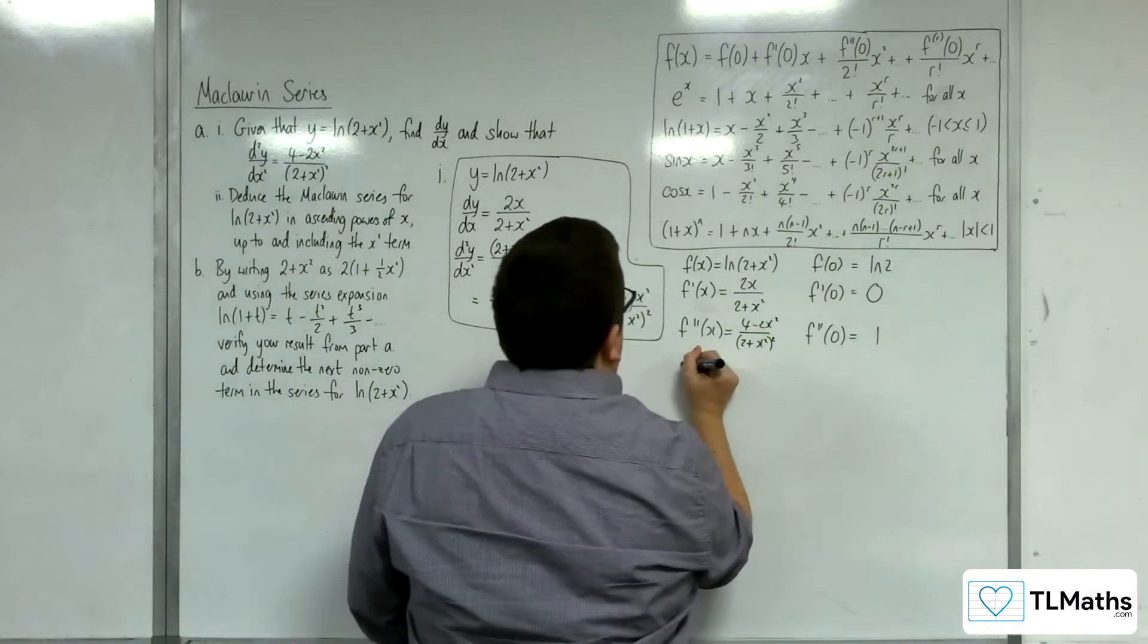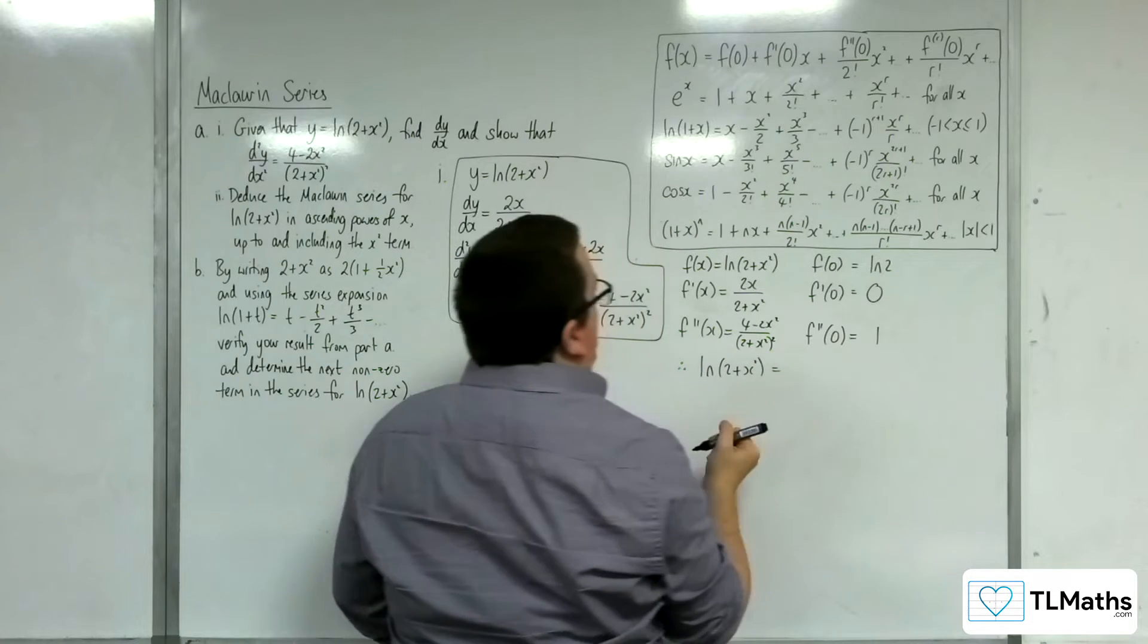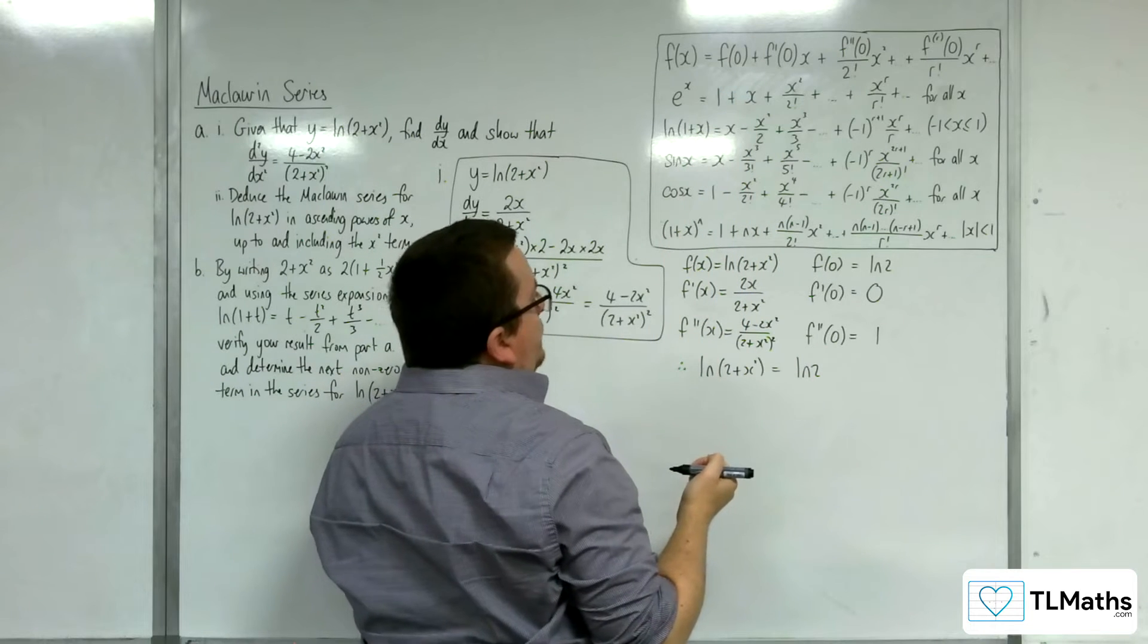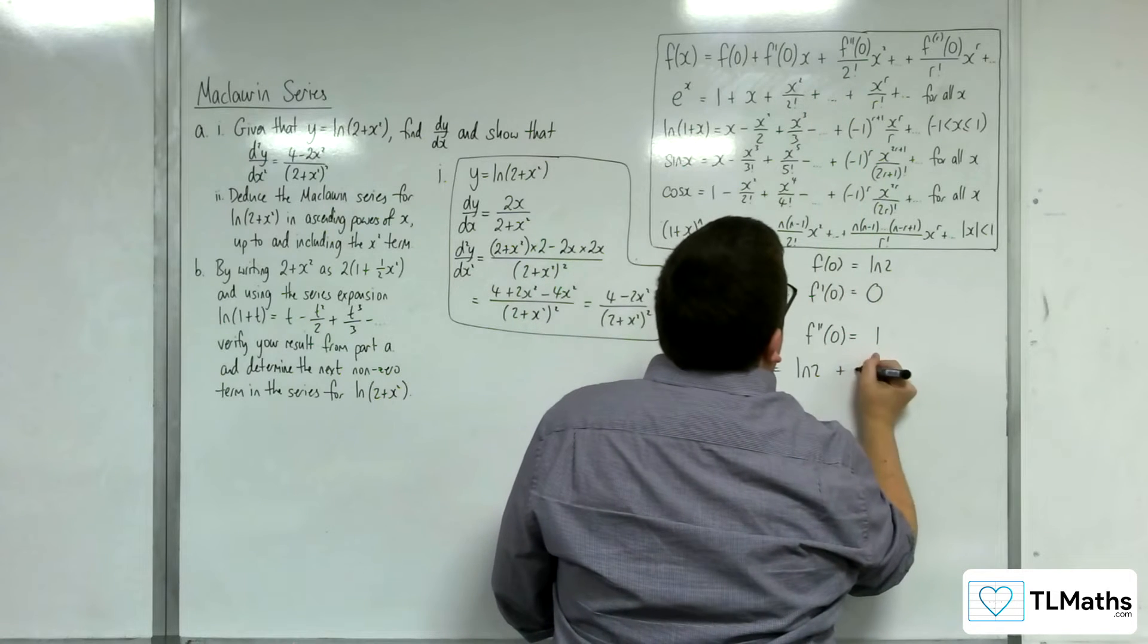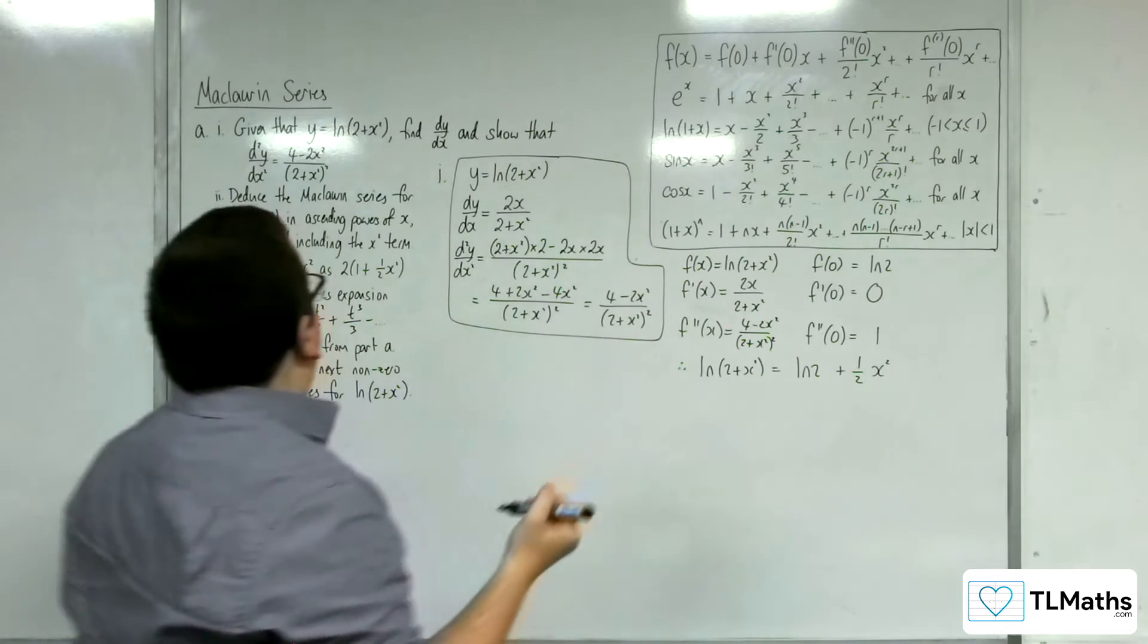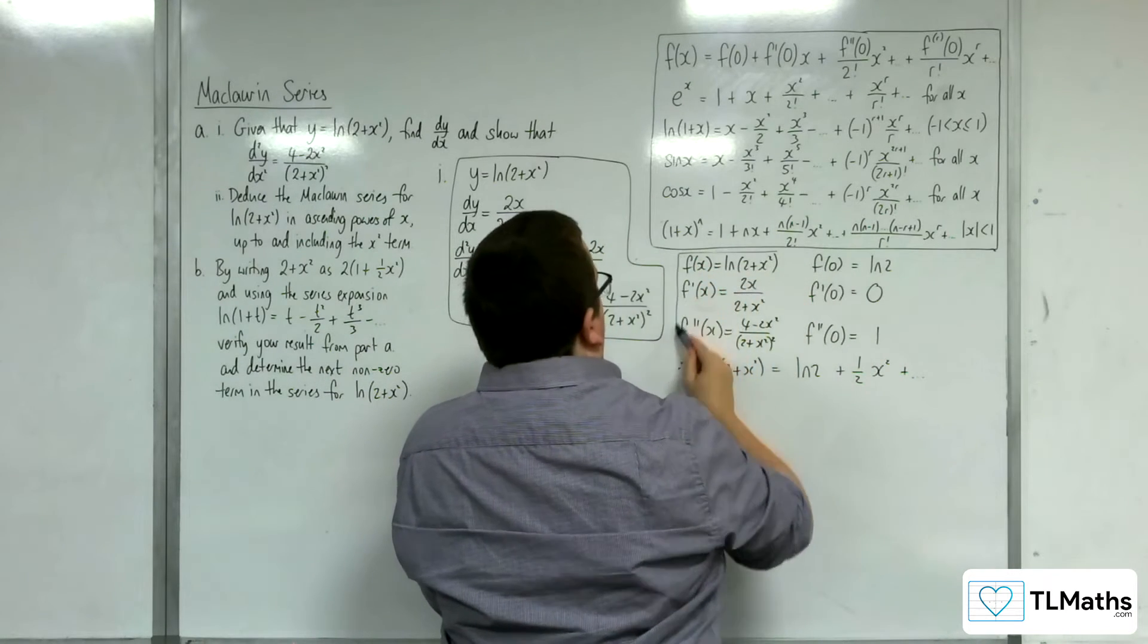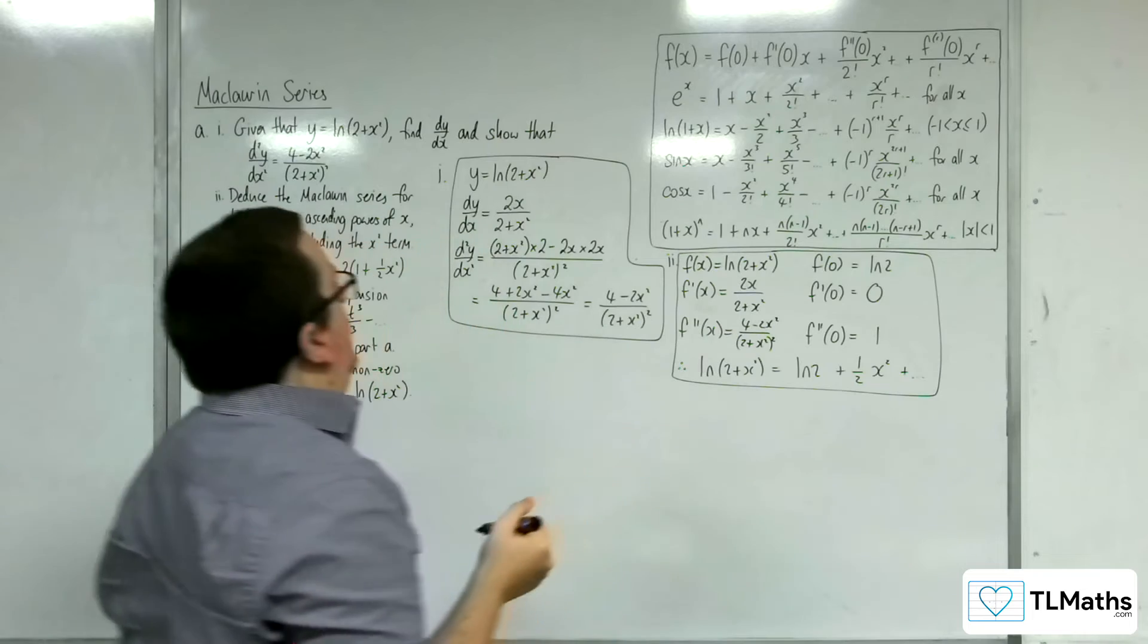So therefore, log of 2 plus x squared is equal to, so f of 0 is log 2, plus 0 times x, so plus 0, and then plus 1 over 2 factorial, so 1 half, times x squared. So that is my workings out for part 2 of A.